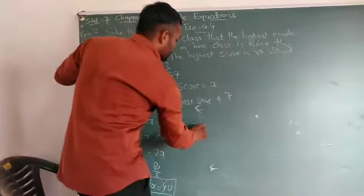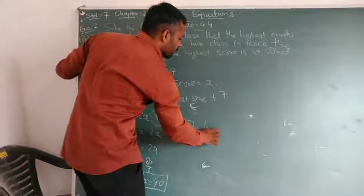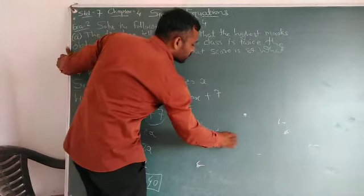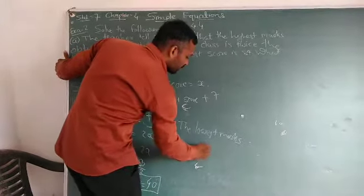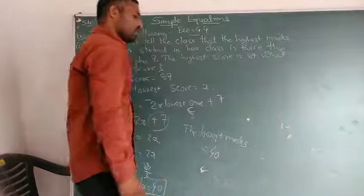So the lowest marks is equal to 40. Okay, done.